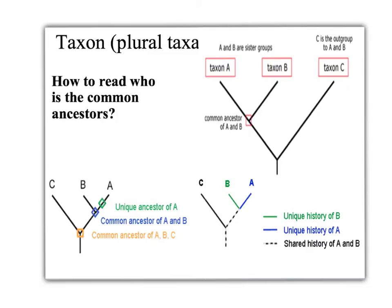How to Read Who Are Common Ancestors? Here we have taxons A, B, and C. In this area, we see that taxons A and B have a common ancestor. Taxons A and B are called sister groups. However, taxon C is an outgroup to taxons A and B because it is not connected.